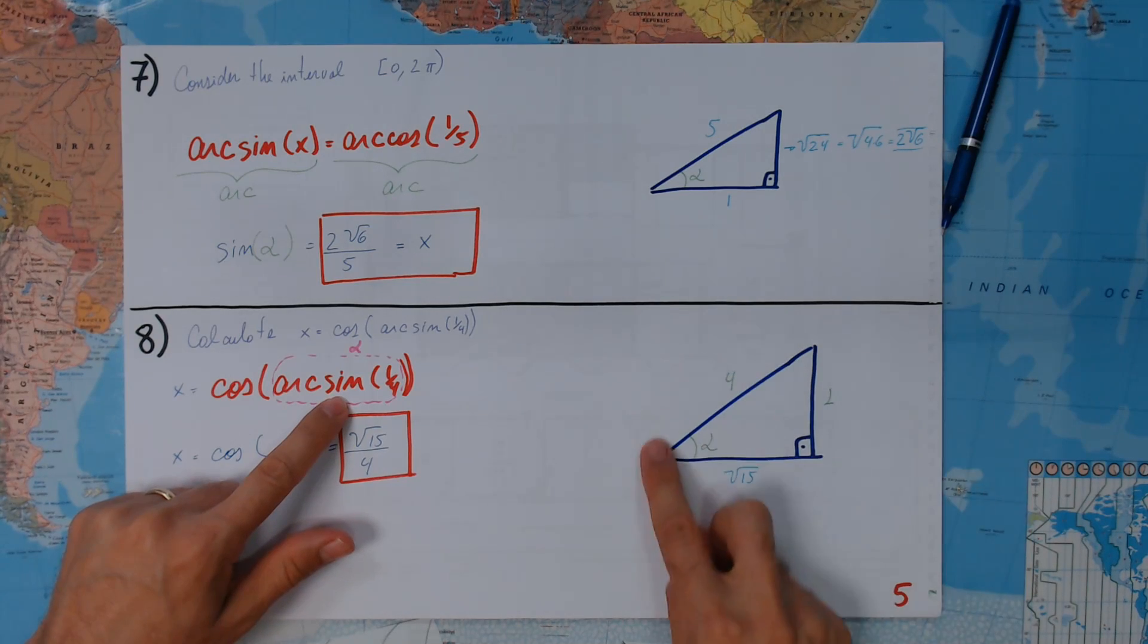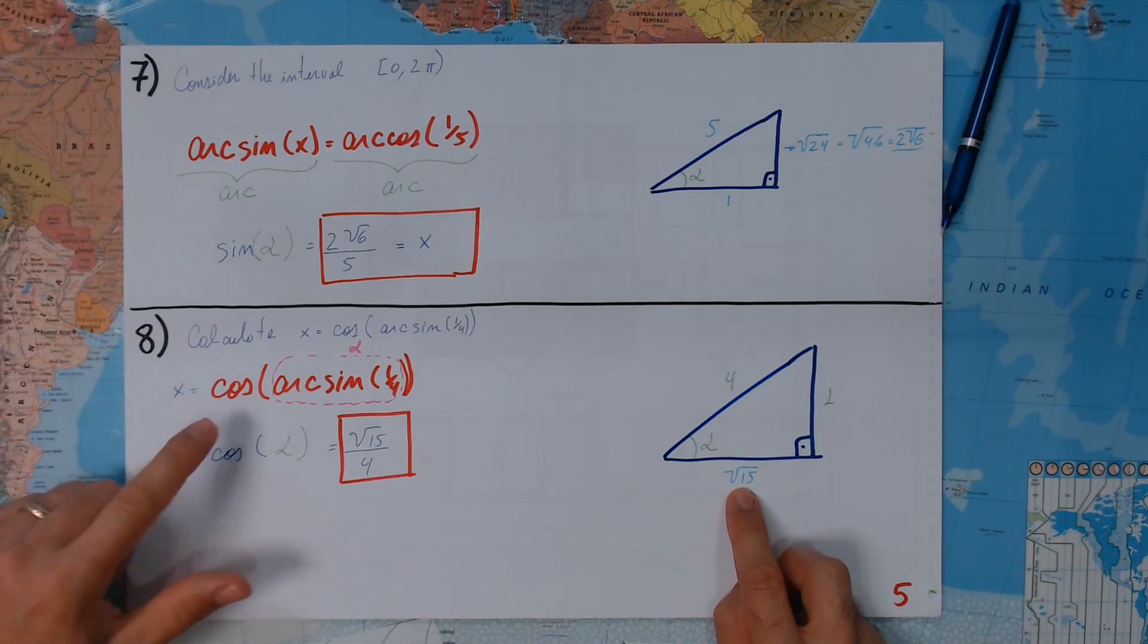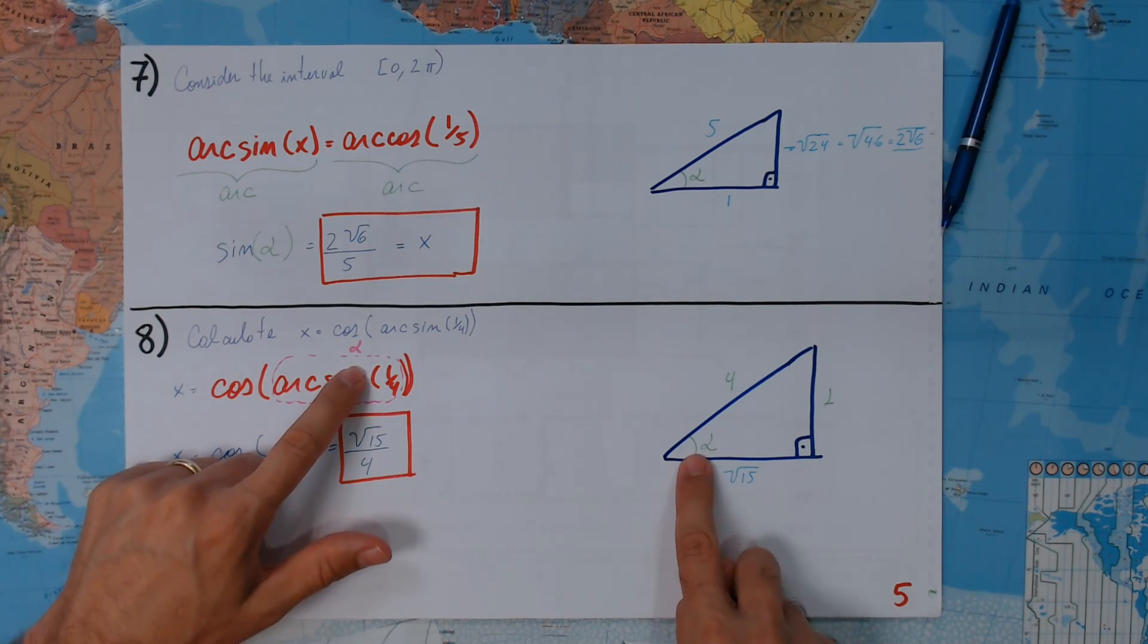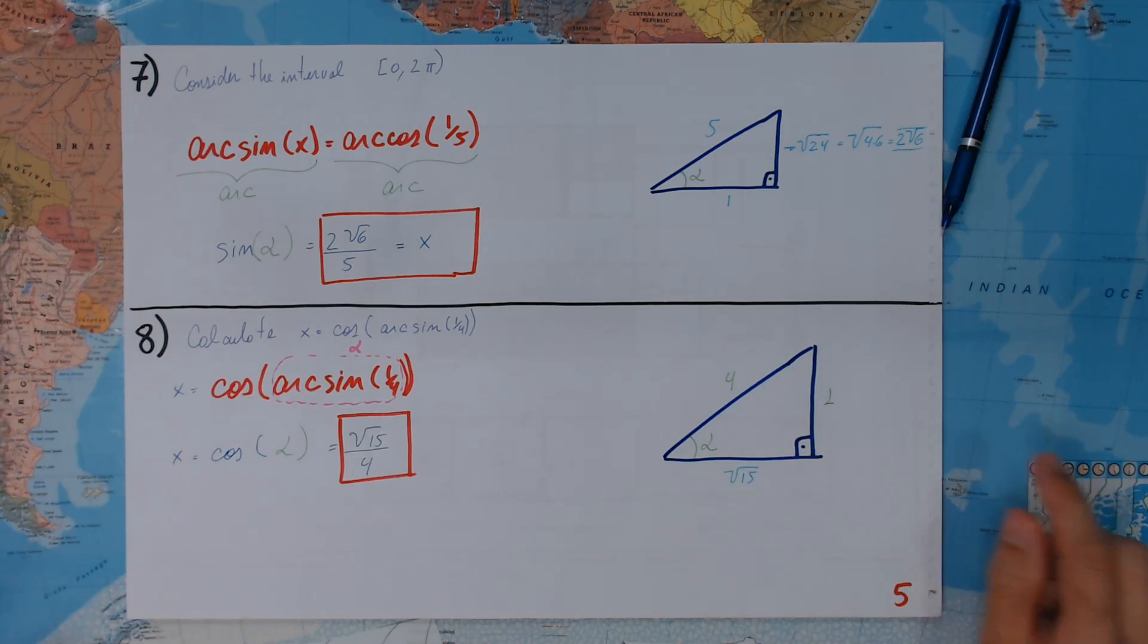We do Pythagoras here and we calculate square root of 15. Now, what is the cosine of that angle alpha? It's just this over this. Very simple.